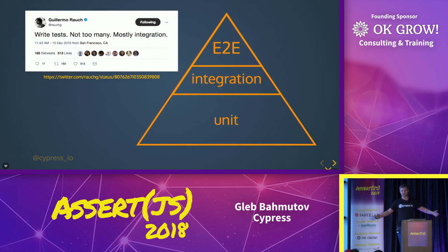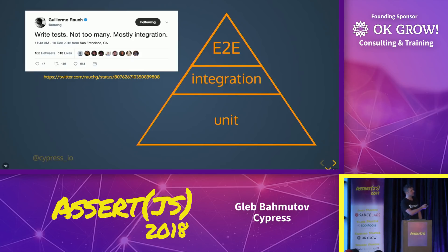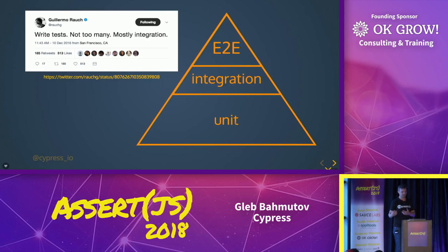So now let's argue — what's the shape of a pyramid? Is it wide base? Is it narrow? Is it inverted? Is it an ice cream cone? One of the most popular guys says — and Kent, I think, agrees — 'write the right test, but not too many, and mostly integration,' because that's where you put things together. That's what more realistically you should be testing rather than unit tests.